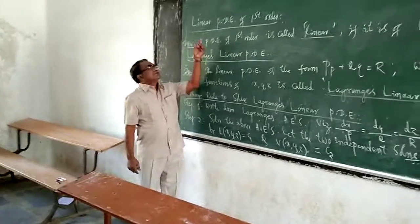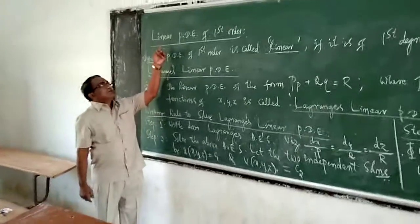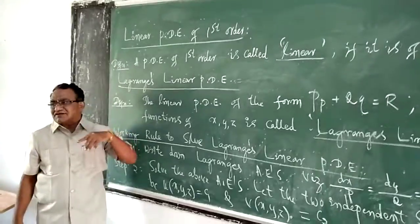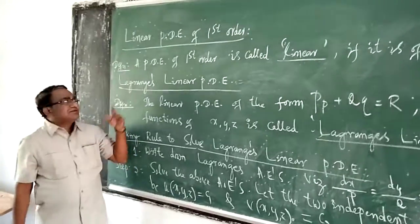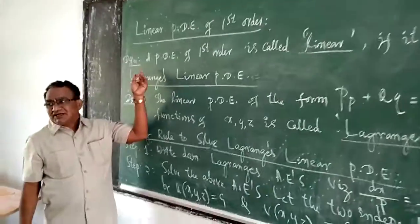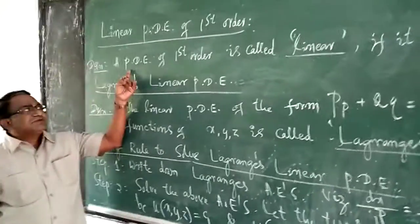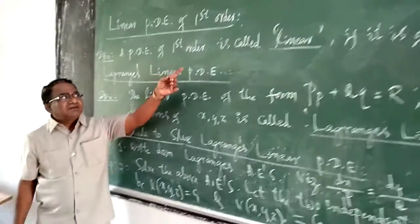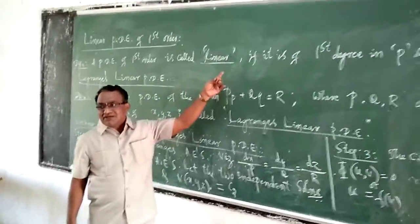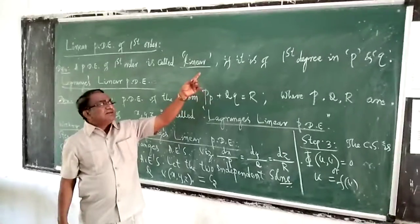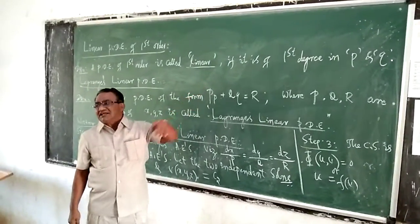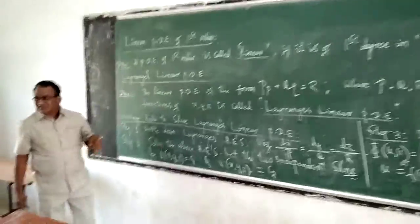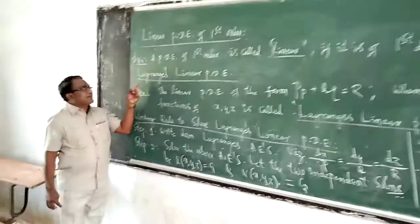Today, we shall discuss linear partial differential equations of first order. A partial differential equation of first order is called linear if it is of first degree in P and Q.